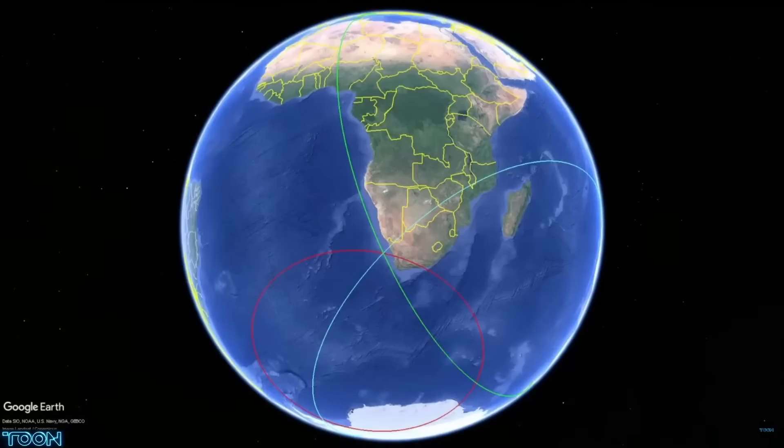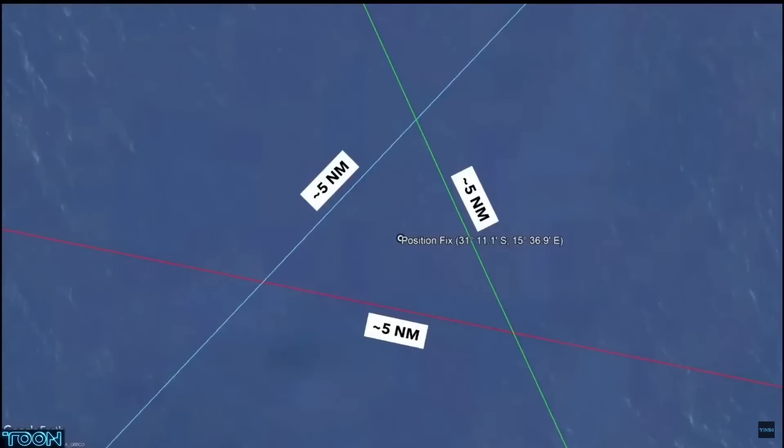And where these circles intersect is my position fix. So this is it, zoomed right in, just so we can see how tightly these three circles intersect. So my position fix, which looks to be accurate to within about two nautical miles,